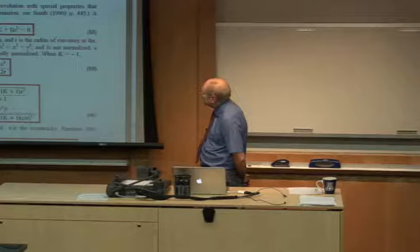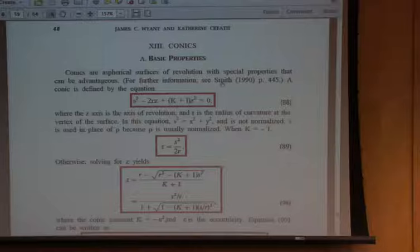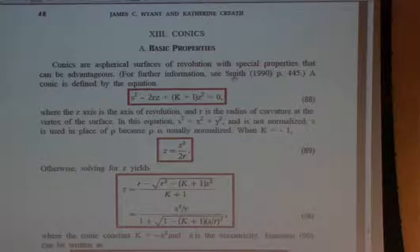A good reference on conics is Malacara, and also Smith's book. If we have a conic and we let S squared be X squared plus Y squared — the coordinates in the pupil — we can write S squared minus 2RZ, where R is the radius of curvature at the vertex of the surface, plus K plus 1 times Z squared equals zero.